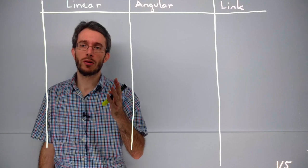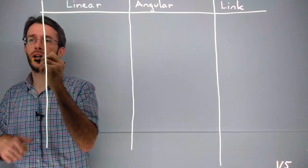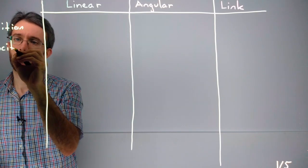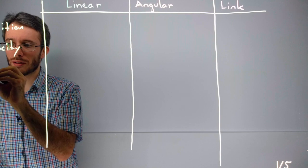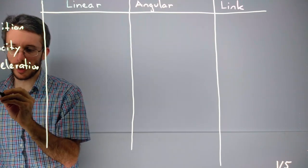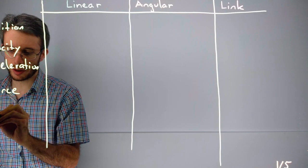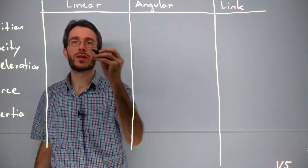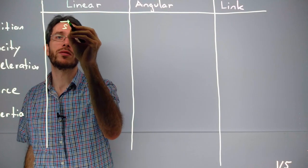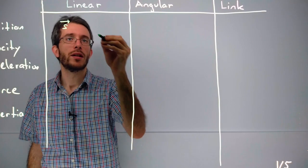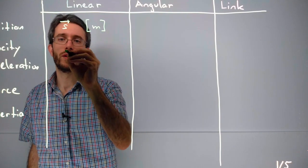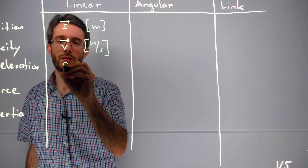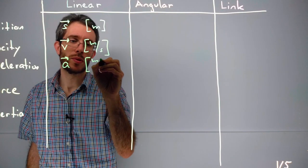So first, let's think about the main entities. We had position, velocity, and acceleration, and we had force and inertia. What are the letters used in the linear case, and what are the units? For position, we usually use s, sometimes you also see x, y, z, and the SI unit is meters. For velocity, we use v, a vector, and we use meters per second. And for acceleration, a vector, we use meters per second squared.